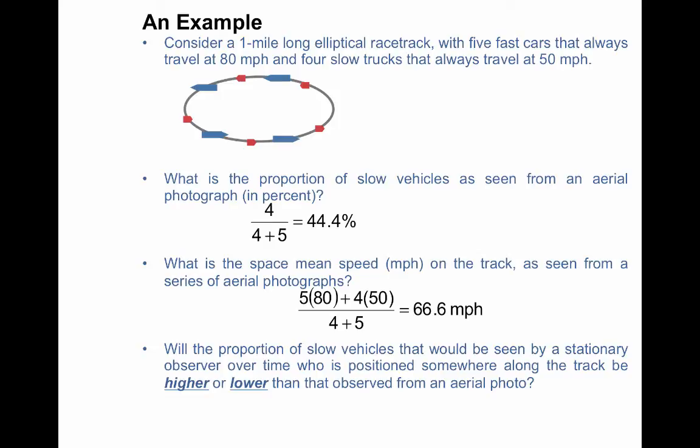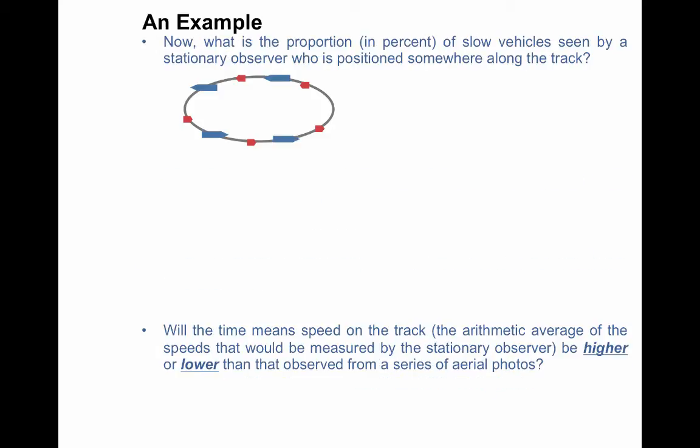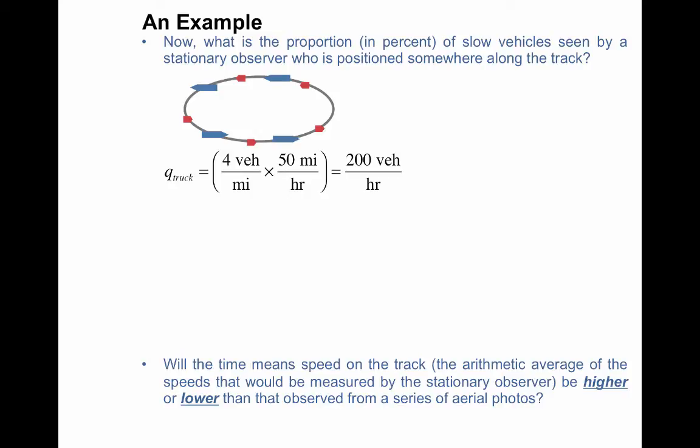And so what's going to happen? Well, the fast vehicles are going to be passing the slow trucks, so you're going to see, or you're going to think you're seeing more than their fair share of fast vehicles. So you will be over-representing the fast vehicles in this proportion, which means that the slow vehicle proportion is going to be lower. So we will calculate that next. And so we're going to use a point-based measure to allocate the proportion of slow vehicles. And so the point-based measure that we're familiar with is the flow.